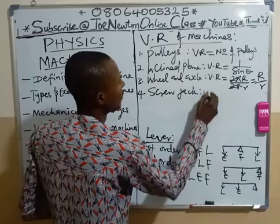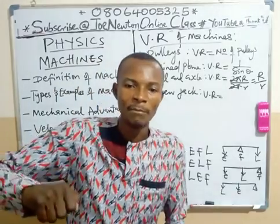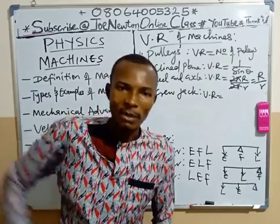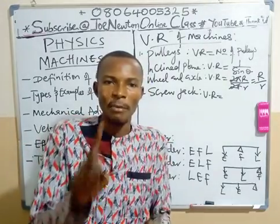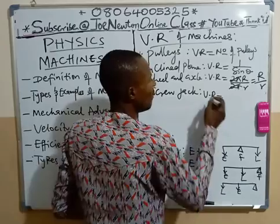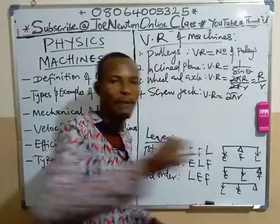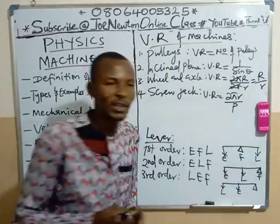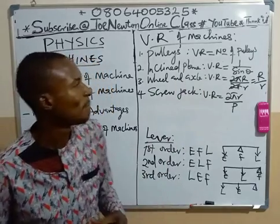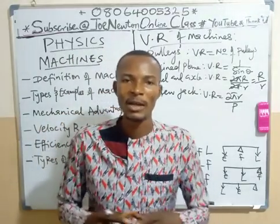For the screw jack, it has a pitch and a tommy bar — the length of arm. As you turn the tommy bar, it makes a circular movement, and the pitch (the threaded distance) lifts upward to jack a stationary vehicle. The velocity ratio of the screw jack is given by 2πr over the pitch — where 2πr is the effort distance (the circumference traced by the tommy bar) and the pitch is the threading distance of the screw jack. We should memorize these formulas because we will apply them in subsequent classes for calculations.